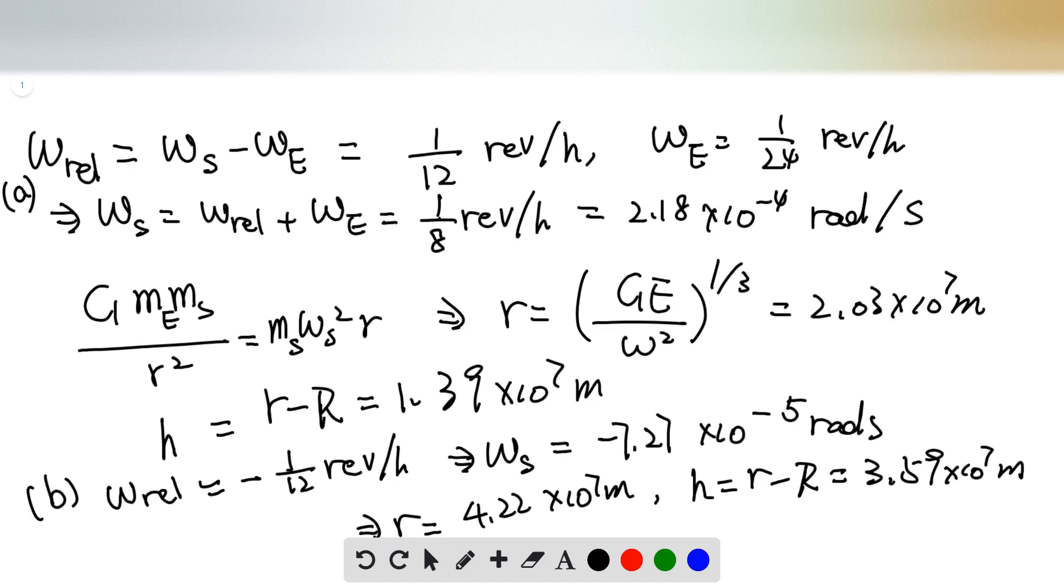The force between the Earth and the satellite is the gravitational force, which can be calculated by constant G, mass of the Earth times mass of the satellite, divided by the distance between the center of the Earth to the satellite.